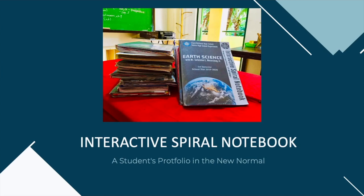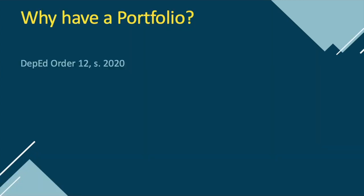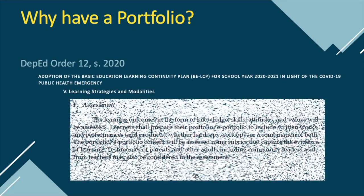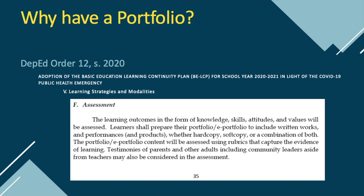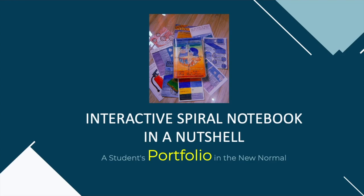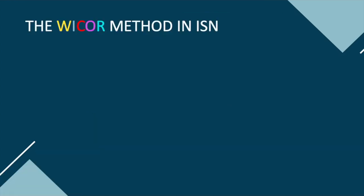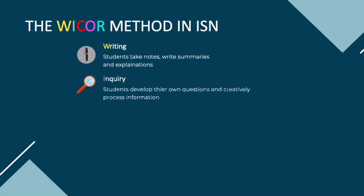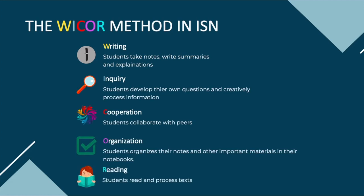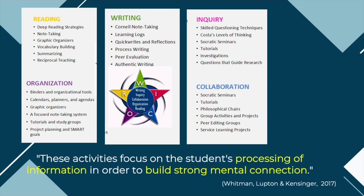Here are some examples of the ISN. The ISN is actually a portfolio. Based on DepEd Order Number 12, Series of 2020, students in the new normal are required to have a portfolio. It can be a hard copy or an electronic copy. The ISN can serve as either. Now, the ISN utilizes the WEAKER method. WEAKER stands for W — Writing, I — Inquiry, C — Cooperation, E — Organization, and R — Reading. Therefore, the ISN utilizes writing, inquiry, cooperation, organization, and reading activities.